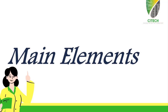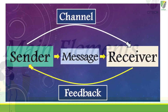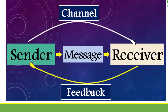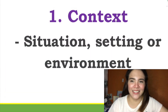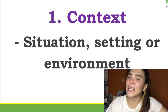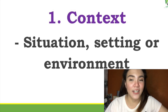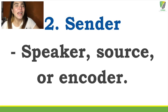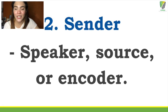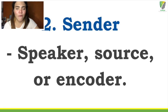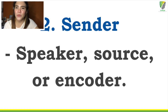Now that we are aware of the characteristics of communication, let us proceed to the elements. This diagram shows the process of communication. We are going to define and give the function of each element. The first element is the context — the situation, the setting, or the environment. Any activity is affected by the context in which it occurs. The second element is the speaker, also called the sender, the encoder, or the source. The sender is somebody who is conveying the message or the information and who initiates the conversation, using a combination of verbal and non-verbal symbols and signage for the information to be sent effectively.